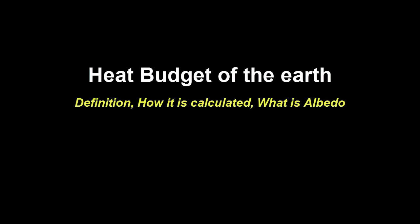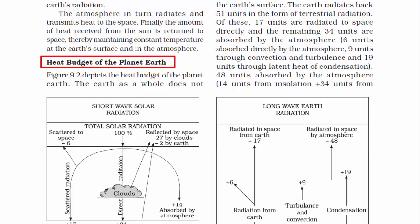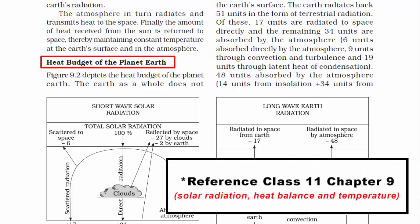In this video, we are going to understand about the heat budget of the Earth. Now by the term heat budget, you can easily relate that it is referring to the balance between incoming heat absorbed by the Earth and the outgoing heat escaping it in the form of radiation.